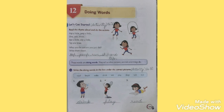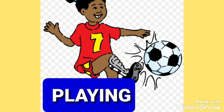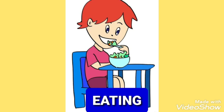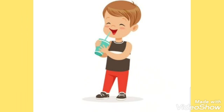Before moving to the examples, I would like to ask you one thing: what are you doing right now? You are watching my video. What am I doing right now? I am teaching you through this video. Here, the actions performed by me and you are doing words. Watching is the action performed by you, and teaching is the action performed by me. Children, doing words tell us about actions or expressions we do, such as playing, reading, sleeping, talking, eating, brushing, drinking, and running.